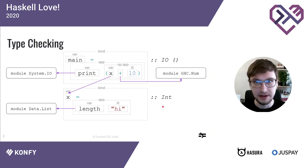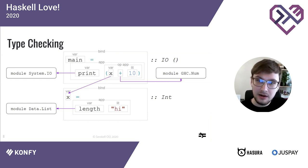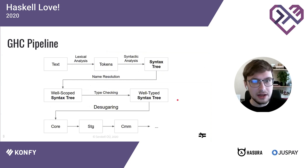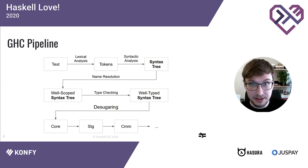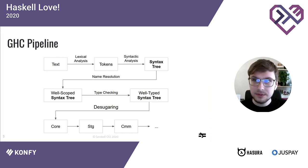Next we do type checking: we analyze the program and infer the types of its expressions and sub-expressions. So we infer that 'main' is of type IO unit and 'x' is of type Int. That's the GHC front end — we convert text to tokens, tokens to a syntax tree, then add scoping information, then type information. This gives us a well-scoped, well-typed syntax tree, which is the input to desugaring.